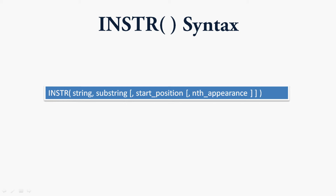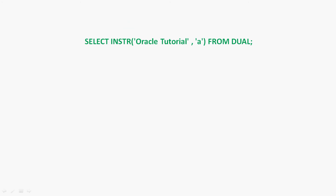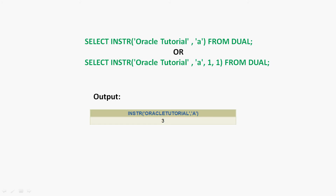We will see some examples to make INSTR clearer. The query SELECT INSTR('oracle tutorial', 'a') FROM DUAL is equivalent to SELECT INSTR('oracle tutorial', 'a', 1, 1) FROM DUAL, because the default value of start position and nth appearance is one. The string is 'oracle tutorial', the substring is 'a', start position is one, and nth appearance is one. The result of both queries is three.